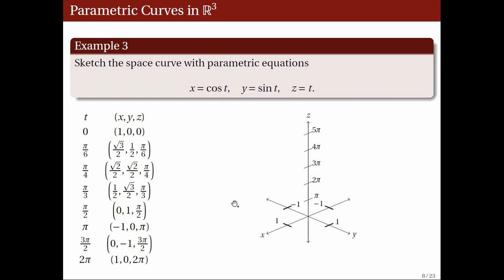Let's plot the points in a three-dimensional coordinate system. Note that in this diagram, we scaled z differently from x and y. When t equals 0, we have the point 1, 0, 0. When t equals pi over 6, we have square root of 3 over 2, one-half, pi over 6. When t equals pi over 4, we have square root of 2 over 2, square root of 2 over 2, pi over 4. We also have the points one-half, square root of 3 over 2, pi over 3; then 0, 1, pi over 2; negative 1, 0, pi; 0, negative 1, 3 pi over 2; and 1, 0, 2 pi.